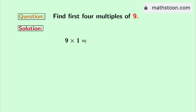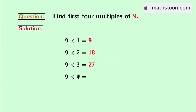9 times 1 is equal to 9. 9 times 2 is equal to 18. 9 times 3 is equal to 27. 9 times 4 is equal to 36.